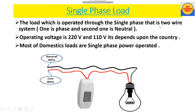Single phase load is the load which is operated through a single phase, that is a two-wire system — one is phase and the second is neutral. The operating voltage of single phase load is 220 volts or 110 volts, depending upon the country. Most domestic loads are single phase operated. As we can see in this picture, the red wire is our phase wire and the black one is our neutral wire — we have only one phase here to operate the load.